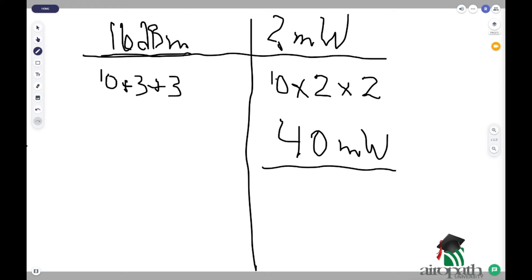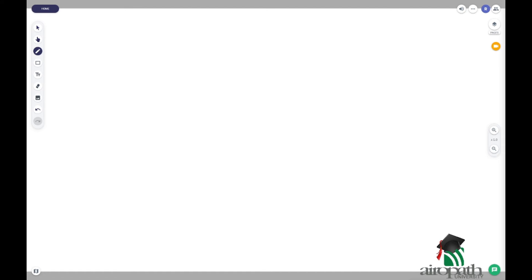Let me go ahead and move on to one that is not quite so clear cut. Again, we're going to separate our values. But in this time, we're going to try to get 125 milliwatts equals how many dBm?